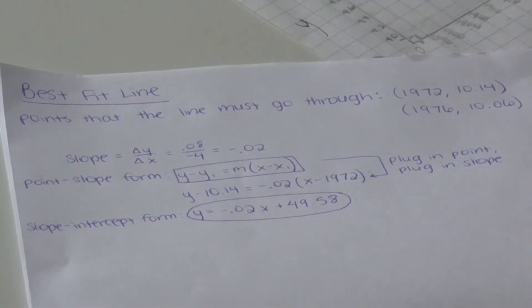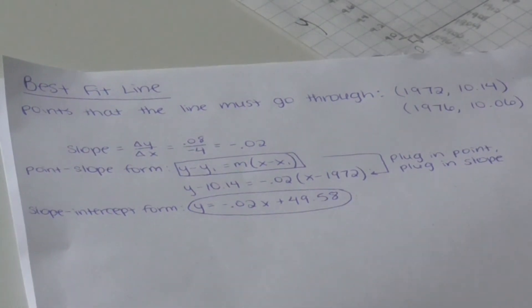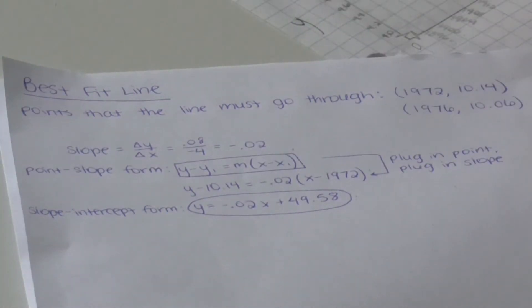To find the equation for this line, we plugged the first point into point slope form, and we used these two points to find the slope, which we plugged in as well. This gave us the equation,